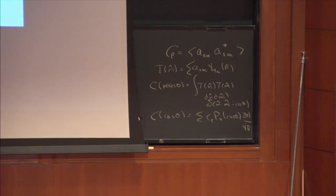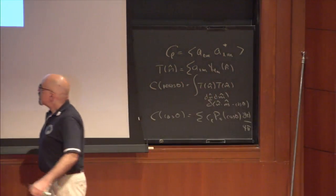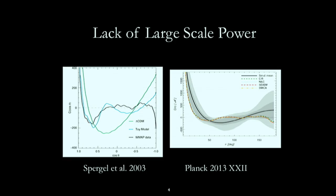What's intriguing: you take the data, compute the correlation function, and here's what it looks like. It basically goes to zero at around 60 degrees and just stays there. And this is the same thing in the Planck data, where again you see the correlation function just sit flat, right at zero, over this huge range of angles. There's basically no correlation between fluctuations beyond about 50 degrees.